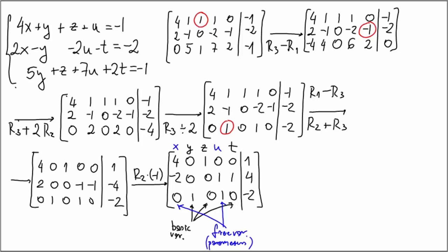From which we can solve for basic variables. So the first equation is 4X + Z = 1. Second, -2X + U + T = 4. And third row, Y + U = -2. This is the system. And from this system, we solve for basic variables.